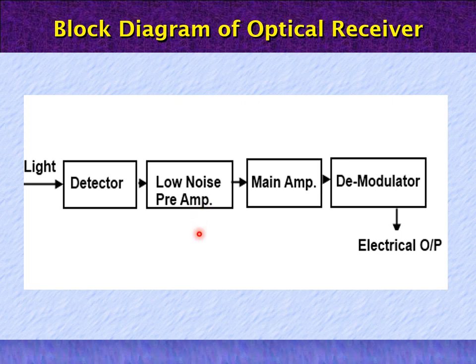At this initial amplification stage, the noise is kept to a minimum value. Then it goes to the main amplifier and then to the demodulator stage, in which information is extracted from the carrier after it arrives at the receiver. Finally, we get the electrical output signal.